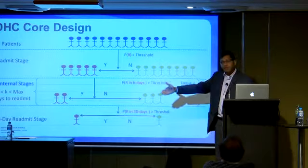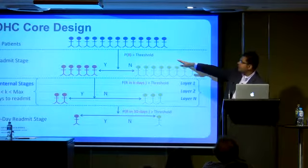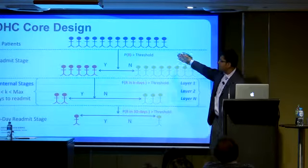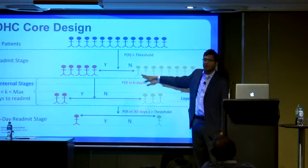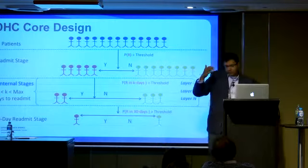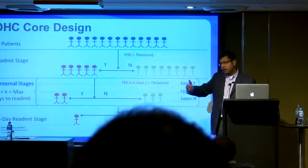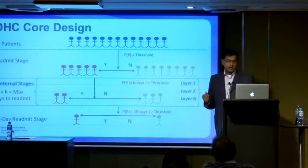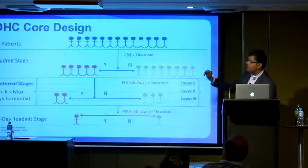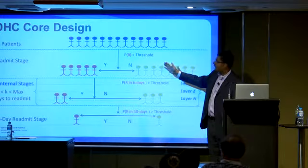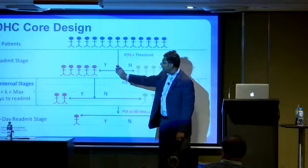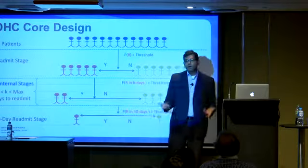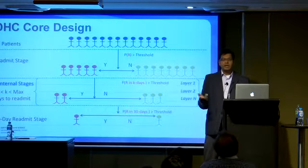We decided to treat this problem as a hierarchical classification problem. There are different care management teams that look at patients at different points in time — a different classifier is needed when the patient is admitted in the ER, and a different set when the patient is about to be discharged. The DHC core design idea is exactly that: patients highly likely to be readmitted go through a different set of classifiers through multiple internal stages, eventually producing one classifier that predicts likelihood of readmission within 30 days.